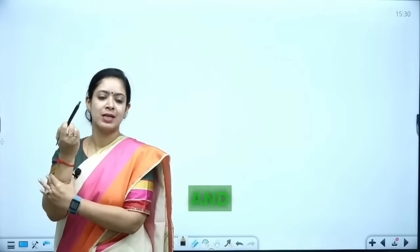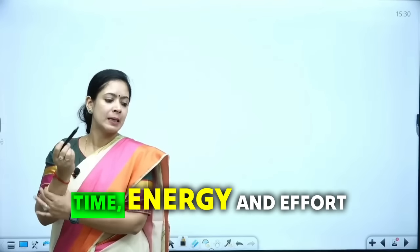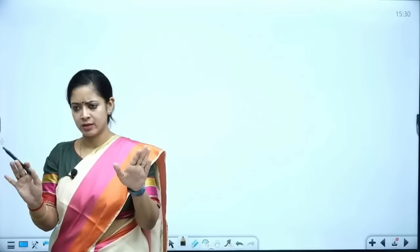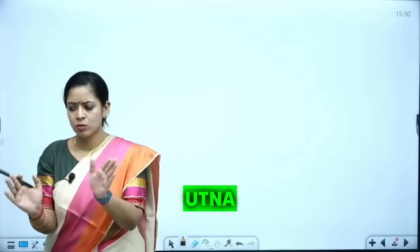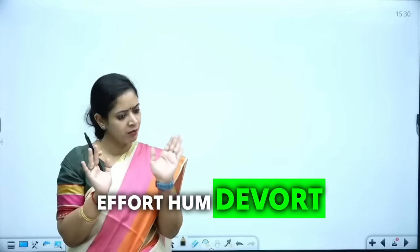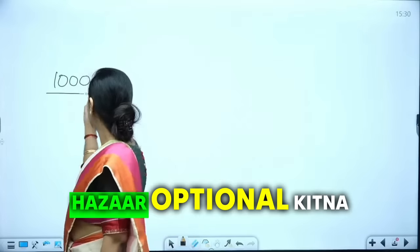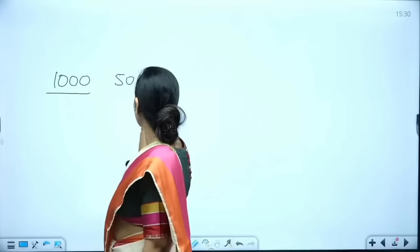In essence, for the right proportion and balance, we should divide our time, energy and effort according to marks. Objectively. Which is number paper? The time effort we will devote. GS is how much? 1,000. Optional is how many? 500. And essay is how many? 250.